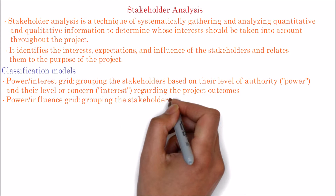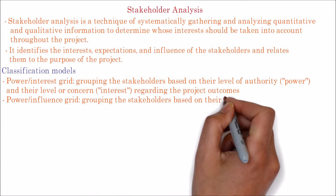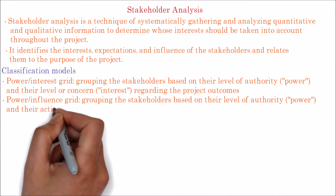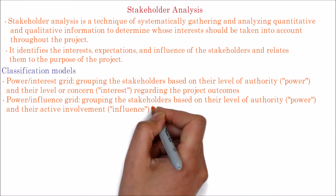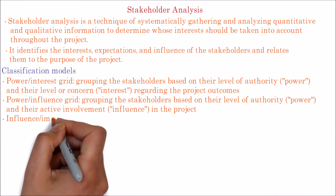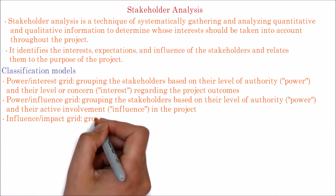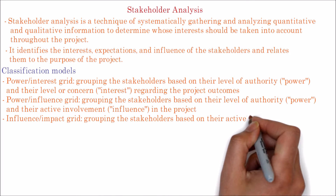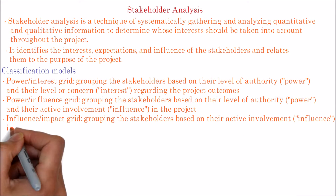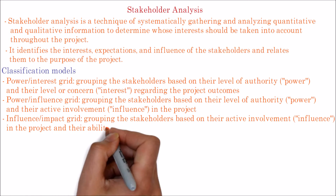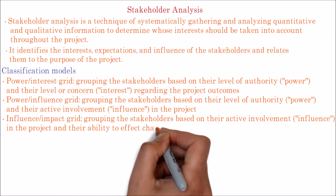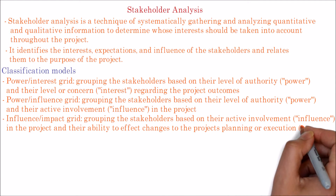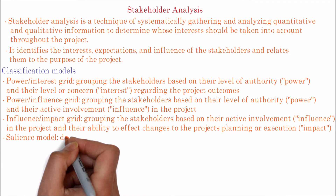The Power-Influence Grid groups stakeholders based on their level of authority (power) and their active involvement (influence) in the project. The Influence-Impact Grid groups stakeholders based on their active involvement (influence) in the project and their ability to affect changes to the project's planning or execution (impact).